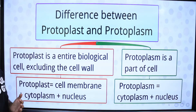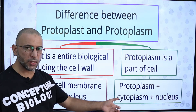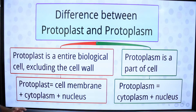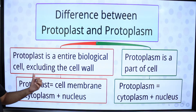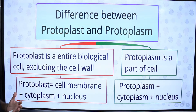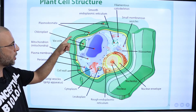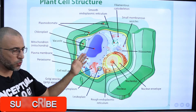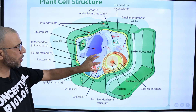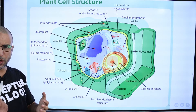What is the difference between protoplast and protoplasm? Protoplasm is cytoplasm and nucleus collectively. Protoplast is cell membrane plus cytoplasm plus nucleus collectively, meaning it is the entire biological cell excluding the cell wall. In a plant cell, the outermost layer is the cell wall, inside which is the cell membrane, then cytoplasm excluding the nucleus. Cytoplasm plus nucleus equals protoplasm; protoplasm plus cell membrane equals protoplast.